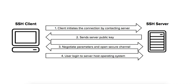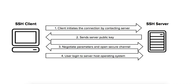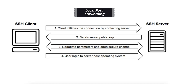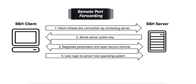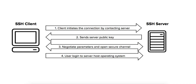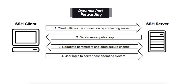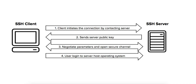SSH can tunnel other network traffic, a feature known as port forwarding, allowing SSH to act as a secure gateway for other network services that may not have encryption built in. Local port forwarding forwards traffic from a local port on the client to a port on the remote server — for example, forwarding a local web browser request to a web server accessible only on the remote machine. Remote port forwarding is the reverse, where the server forwards traffic to the client. Dynamic port forwarding has SSH act as a SOCKS proxy, dynamically routing traffic through the SSH tunnel based on the requested destination.